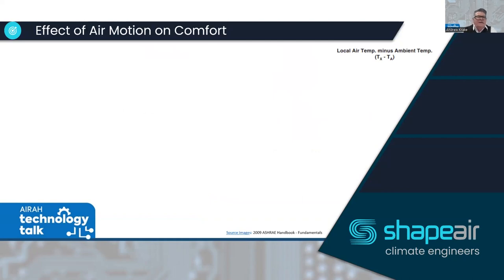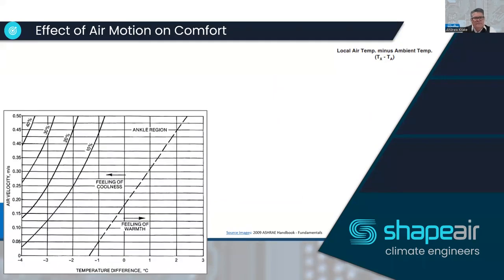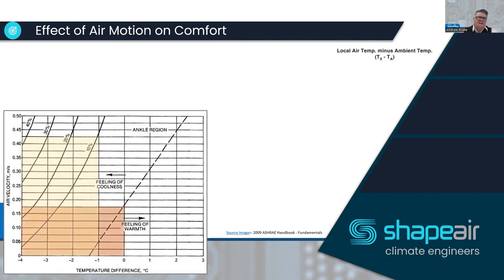Looking at the effects of air motion on comfort: this chart for the ankle region shows that with a velocity of 0.425 m/s and a one-degree temperature differential from ambient, 10% of people would be dissatisfied. If we simply reduce that velocity down to 0.18 m/s and we're on temperature, virtually no one in the space would be dissatisfied.